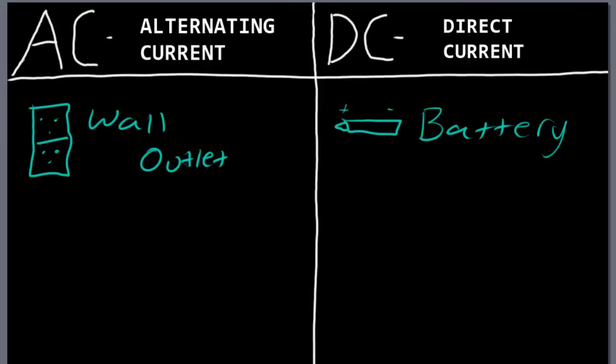Other electronic devices usually will run on direct current. So your cell phone, your computer, all those things, a flashlight, anything that uses a battery is running on direct current.